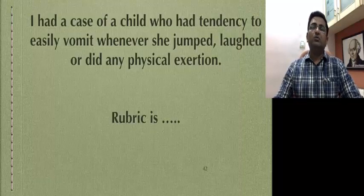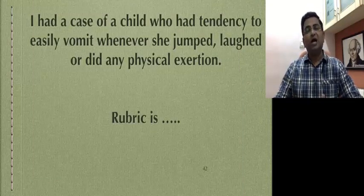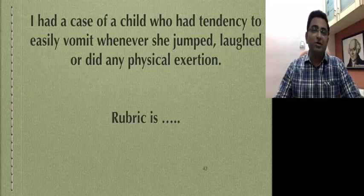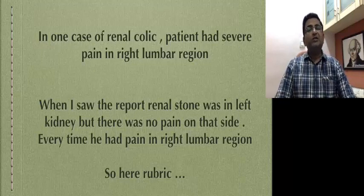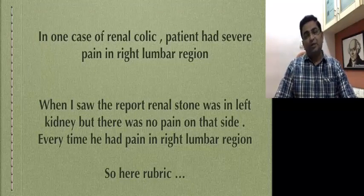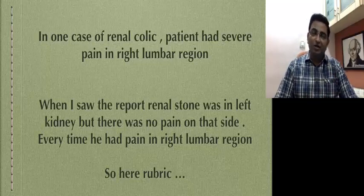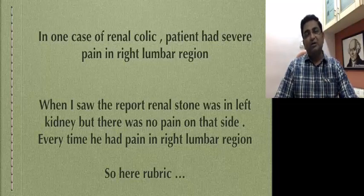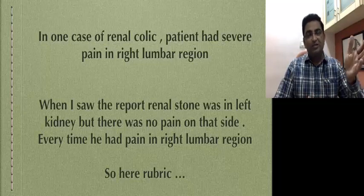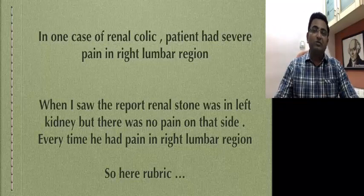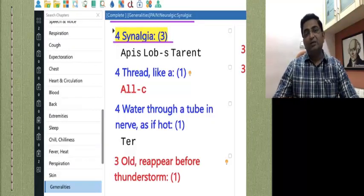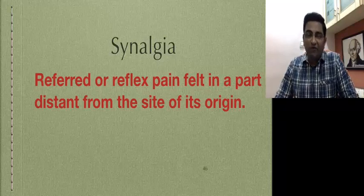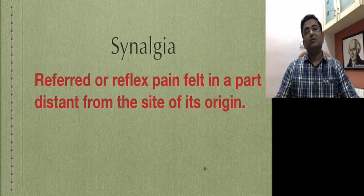I had a case of a child who had a tendency to easily vomit whenever she jumped, laughed, or did any physical exertion. So here the rubric is: Vomiting — easy. In one case of renal colic, the patient had severe pain in the right lumbar region. When I saw the report, the renal stone was in the left kidney, but there was no pain on that side. Every time he had pain in the right lumbar region. So here you can think that the pathology is on one side and pain is on the other side. The rubric in General is: Pain — neurologic — synalgia. Synalgia means it is referred or reflex pain felt in a part distant from the site of its origin.